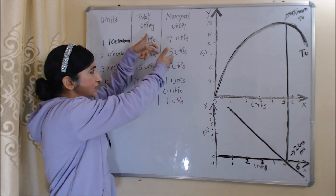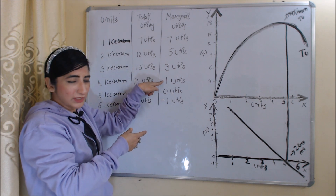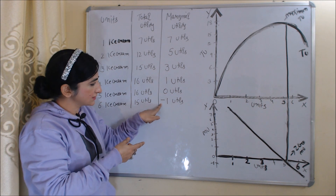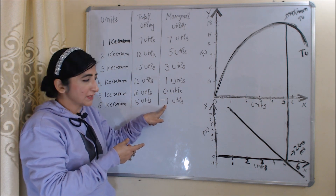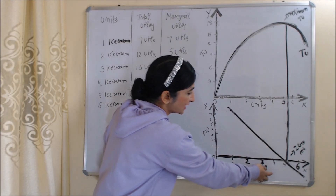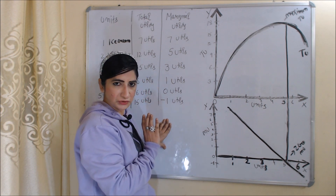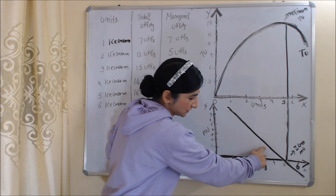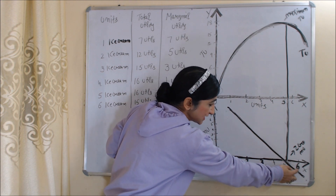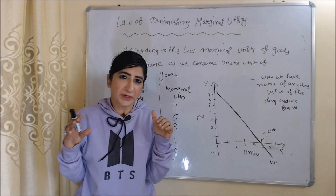Initially marginal utility is reducing: 7, 5, 3, 1. At the 5th unit of ice cream it becomes 0, and finally it becomes negative — negative 1. If you convert this table into a diagram, on the x-axis we have units of ice cream and on the y-axis we have marginal utility. Initially marginal utility is reducing, at the 5th unit it becomes 0, and at the 6th unit it becomes negative 1.